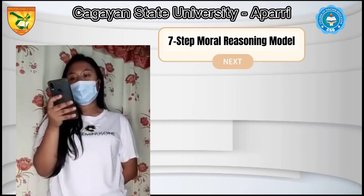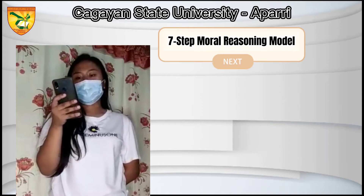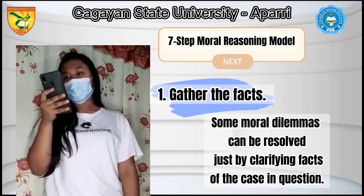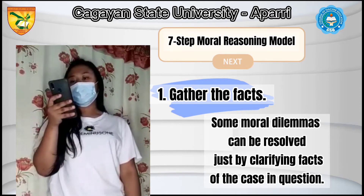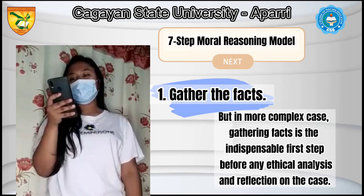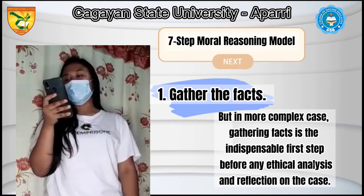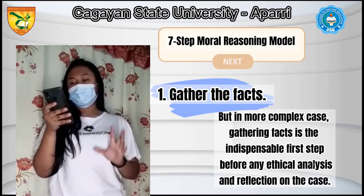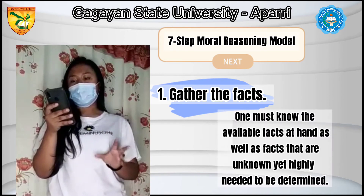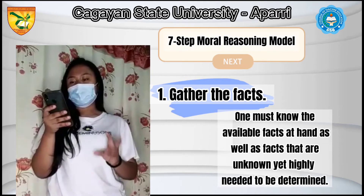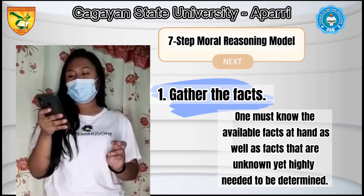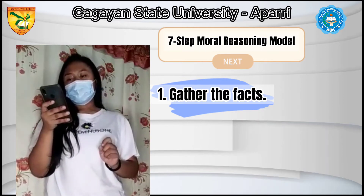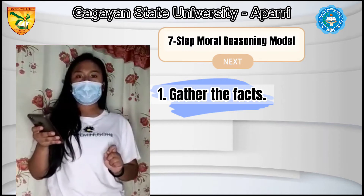Let us move to the 7-step moral reasoning model. Number 1: Gather the Facts. Some moral dilemmas can be resolved just by clarifying facts of the case in question. But in more complex cases, gathering facts is the indispensable first step before any ethical analysis and reflection on the case. One must know the available facts at hand, as well as facts that are unknown yet highly needed to be determined. For example, when you hear rumors, you must first gather facts to clarify things.